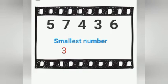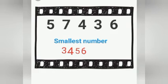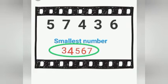Can you guess the number which is bigger than three? Yes, very good. Four. The next number which is bigger than four? Yes, very good. Five. Can you guess the next bigger number? Yes, very good. Six. And the biggest number of the given five digits is? Yes, seven. Therefore, the smallest five-digit number is thirty-four thousand five hundred and sixty-seven.